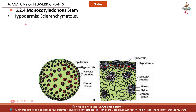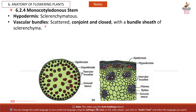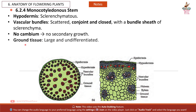The Monocotyledonous Stem has a sclerenchymatous hypodermis. Vascular bundles are scattered, conjoint, and closed, surrounded by a bundle sheath of sclerenchyma. There is no cambium and no secondary growth. The ground tissue is large and undifferentiated. Phloem parenchyma is absent.